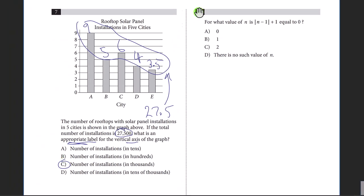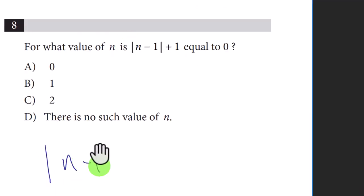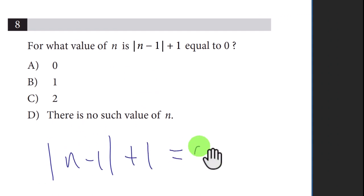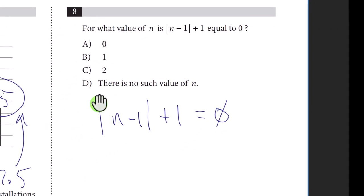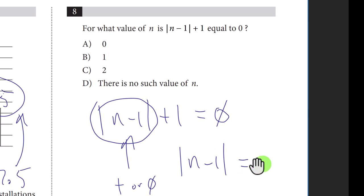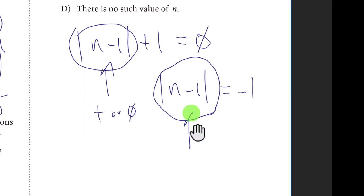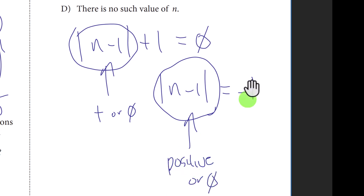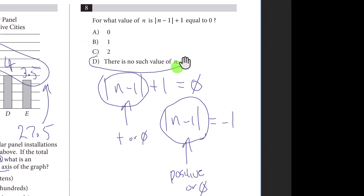Question eight is a sneaky trick question. We have the absolute value of (n minus 1) plus 1 equals zero. Anything inside an absolute value is always positive or zero — you can never get a negative number out of it. Rearranging gives absolute value of (n minus 1) equals negative 1, which is impossible. The answer is D — no such value of n.